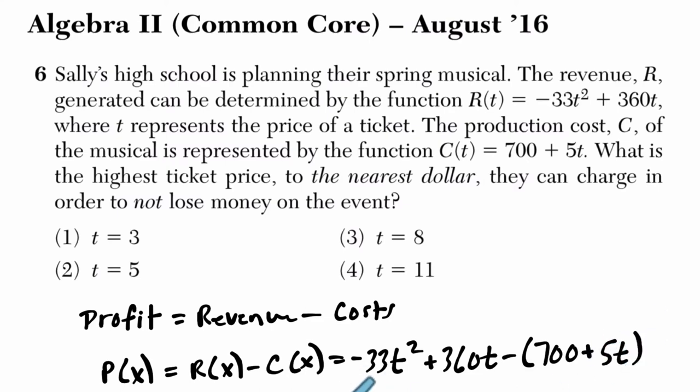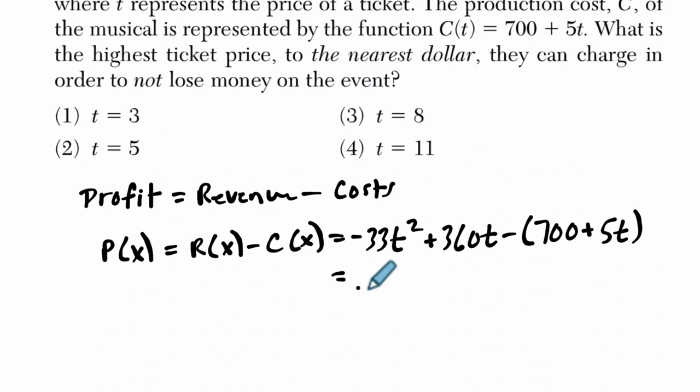Now if we simplify this, we get negative 33T squared plus 360T minus 700 minus 5T. I distribute this subtraction here.